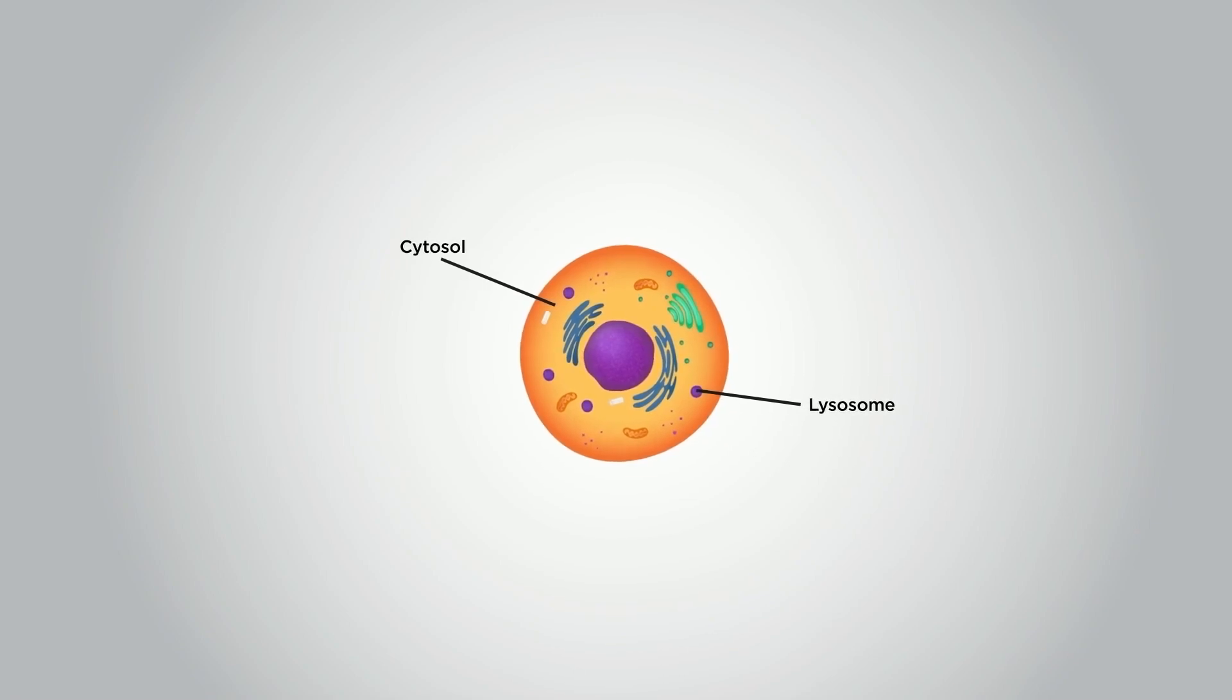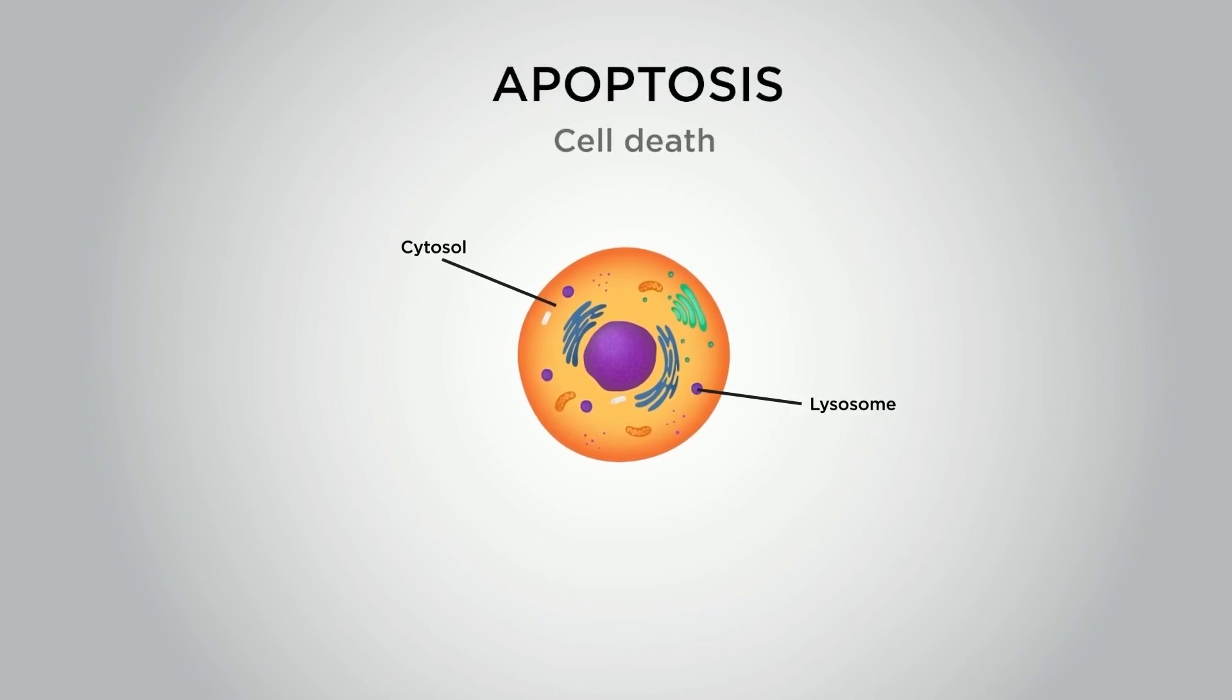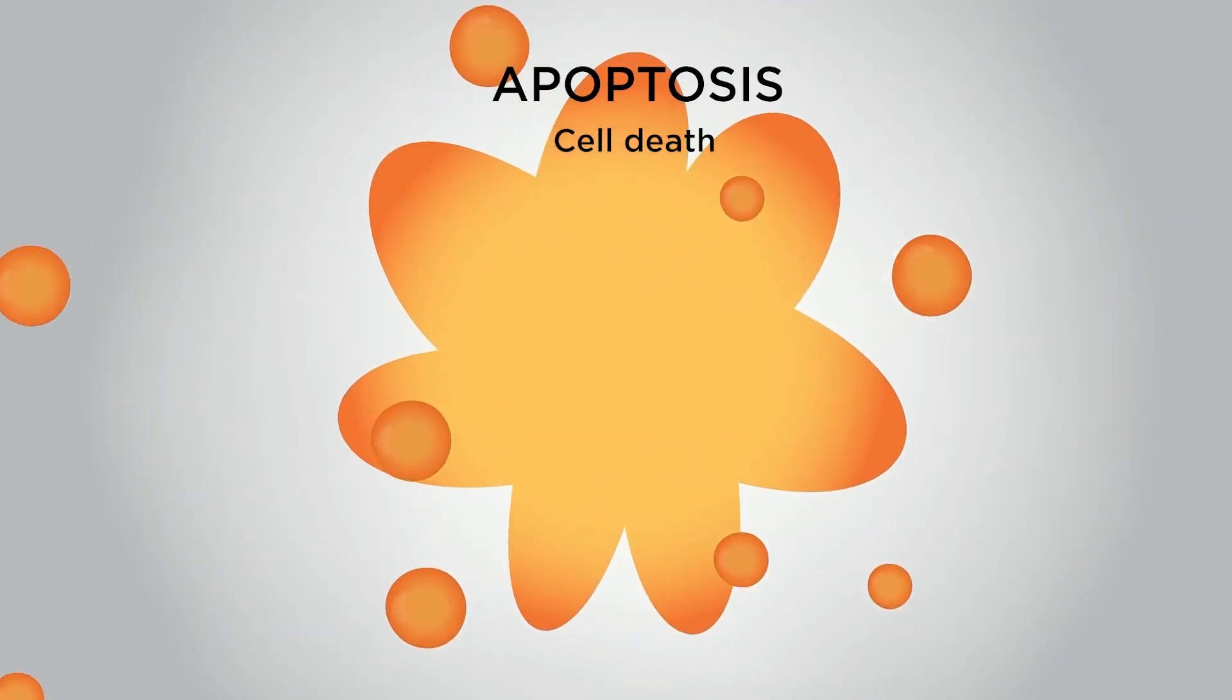However, if many lysosomes empty their contents into the cytosol, the cell will self-destruct. If a cell is damaged beyond repair, the lysosomes will conduct this process of cell death, which is known as apoptosis. However, cells can also undergo programmed cell death or apoptosis normally as part of development or to balance cell numbers in adult tissues. Immune cells can also instruct cells to undergo apoptosis as part of the immune response, if the cell is infected.